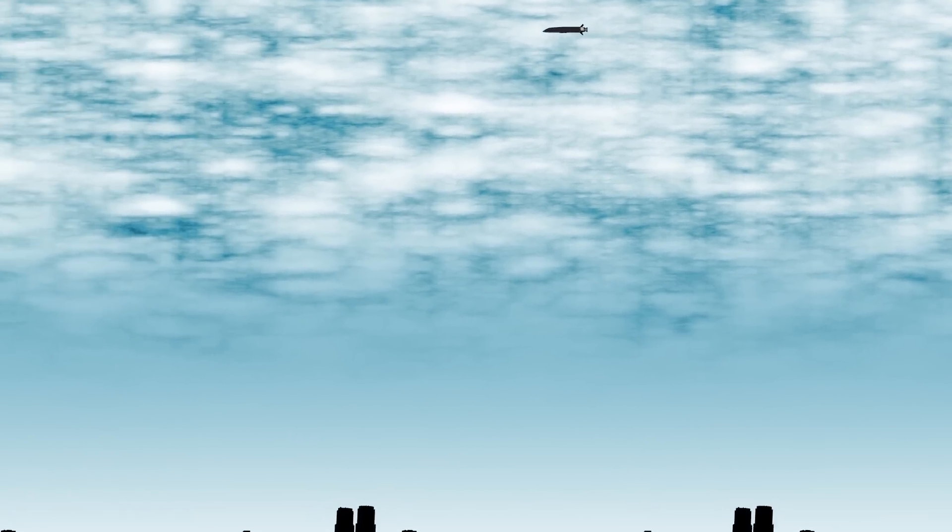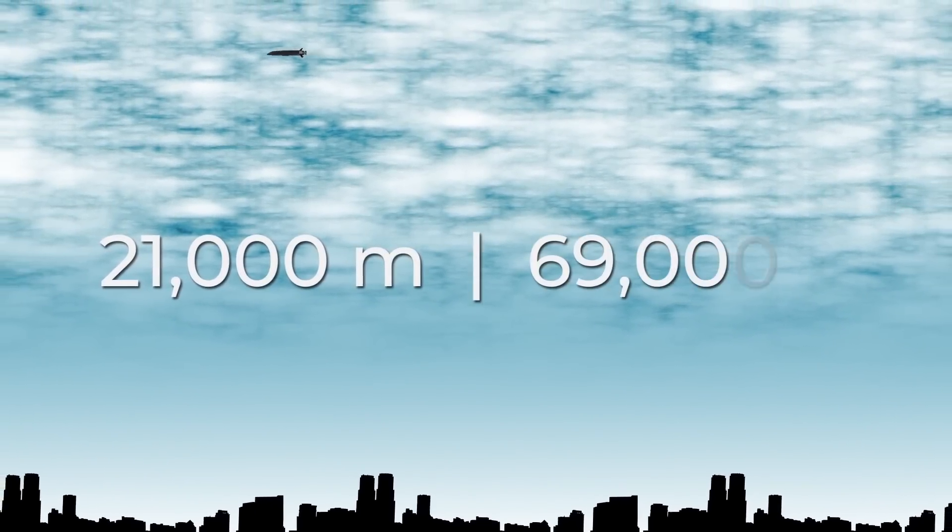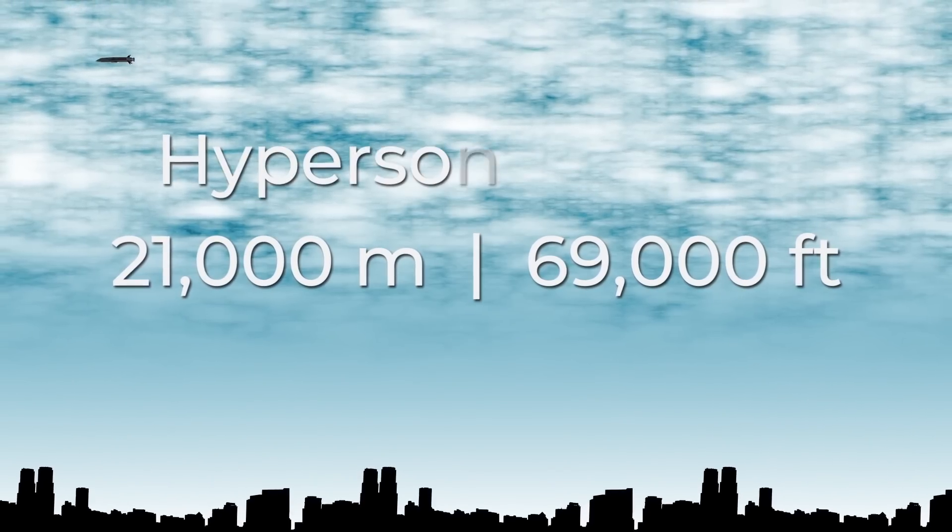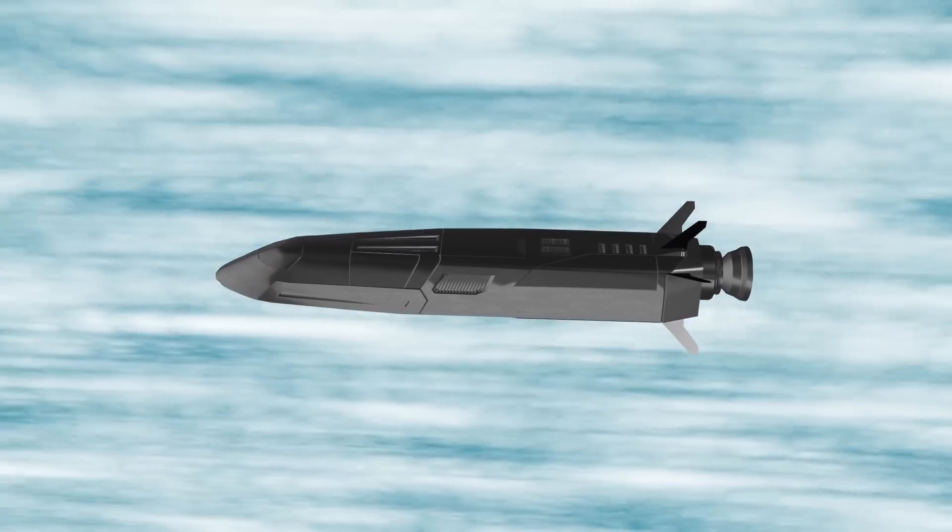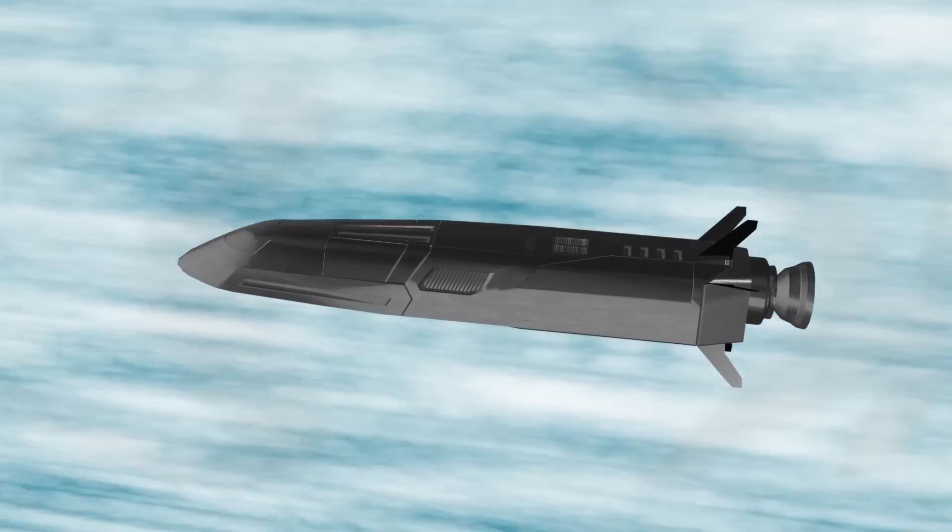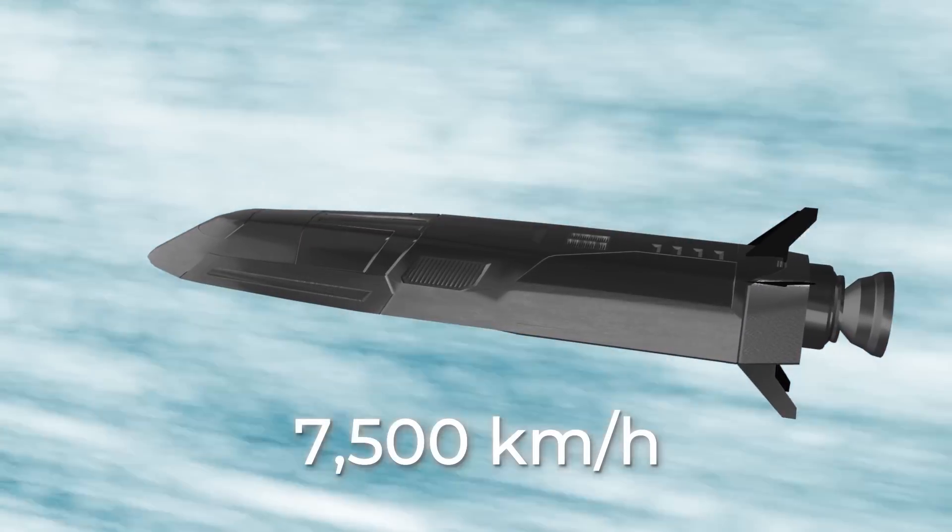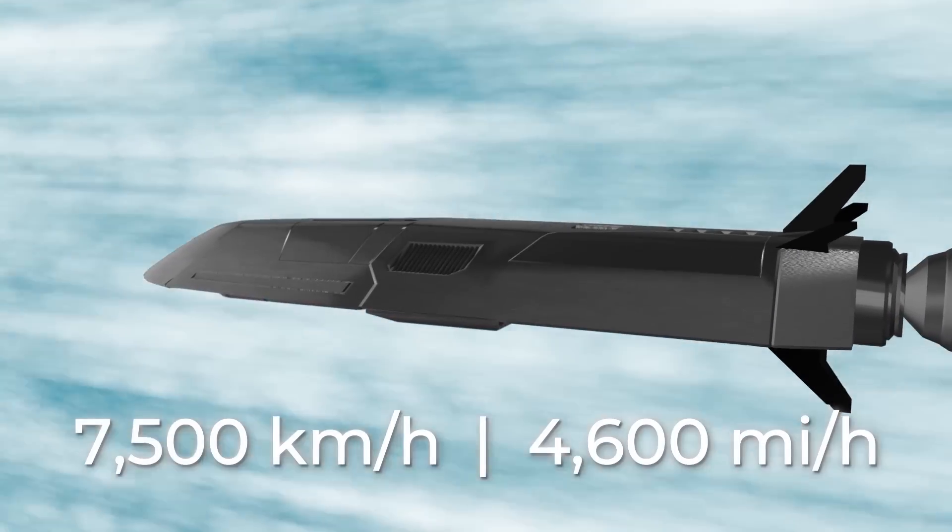It's designed to travel at an altitude of about 21,000 meters, or 69,000 feet, at hypersonic speeds. The X-51 was supposed to reach the mark of 7,500 km per hour. That's 4,600 miles per hour. This would have made it the world's speed record holder among its own kind.